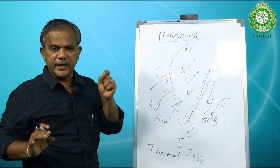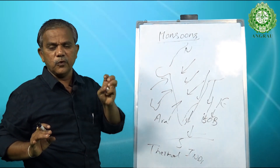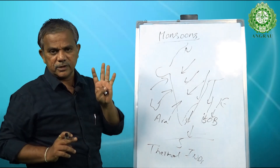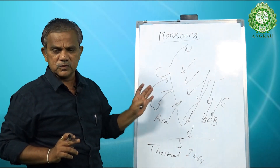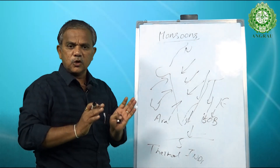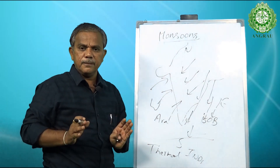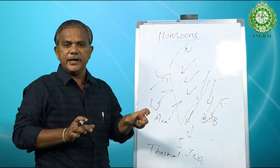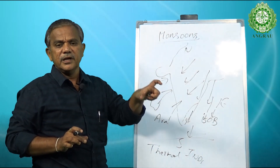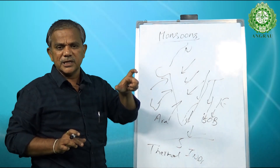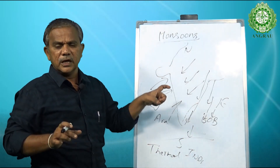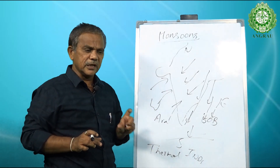The monsoon period of India is confined to only four months: June, July, August, and September. The period of October, November, and December, even though it may correspond to the northeast monsoon, is not given much importance to the country's economy except for Tamil Nadu and the southern zone of Andhra Pradesh.